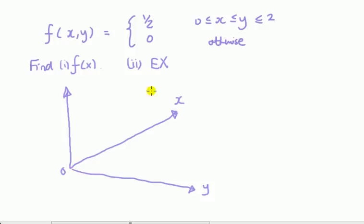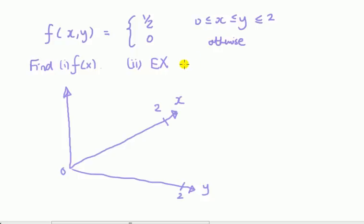Both variables have to be bigger than zero here. The upper limit of x could be 2, and that will happen when y is 2. For y, the upper limit is also 2. It helps to plot the line x equals y to identify the region.